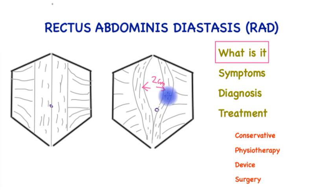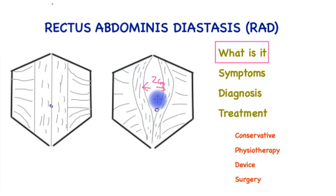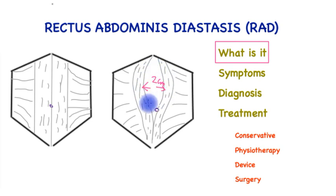The diastasis is typically not uniform throughout the length of the abdomen, and the weakness is not limited to that area but may be a general weakness and a loss of tone of the core of the abdomen. In general, a separation of two centimeters or above fits the diagnosis of diastasis.